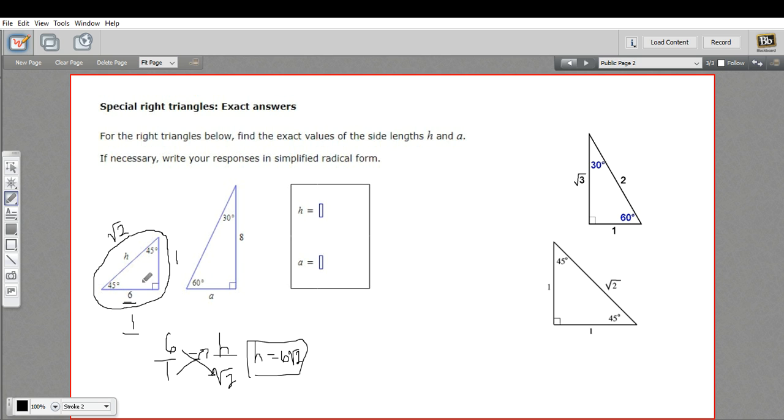Sometimes the answer might not be as obvious as in this 45-45-90 triangle. Let's take a look at this 30-60-90. Again, the first thing I'm going to do is separate the two worlds and write in my ratio. So one, two, and square root of three. I did that backwards. One, two, and the square root of three. Hypotenuse is the two side. The other leg is the square root of three side.